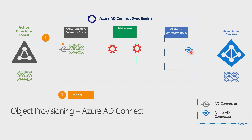It also uses a differential query to only get the changes on the forest since the last import happened. If there are multiple forests in the environment, you can configure another connector which creates a corresponding connector space. The connector needs network connectivity to the target forest. The import steps run in sequence. The import kicks in for Azure AD, and the cloud object changes are also stored in the Azure Active Directory connector space.